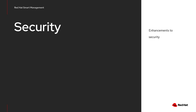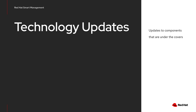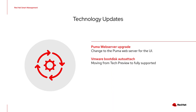We always do enhancements for security. Satellite 6.8 added support for common access card support via Red Hat Single Sign-On, and the 6.9 release is adding the ability to create a time-based one-time password for two-factor authentication. We've got some under-the-hood technology updates as well: we changed to the Puma web server, which should result in improved speed when using the web UI. VMware Boot Disk Auto Attach, which was Tech Preview several releases ago, has been moved into fully supported status.